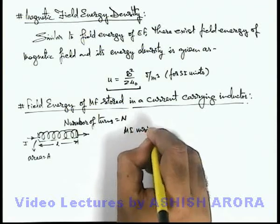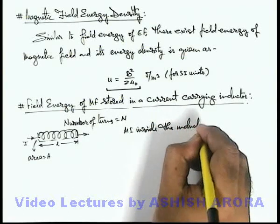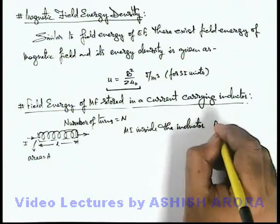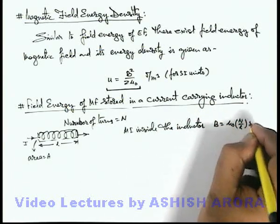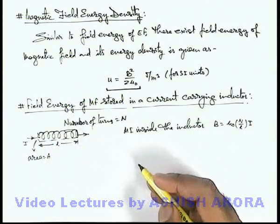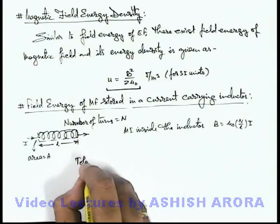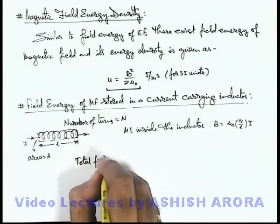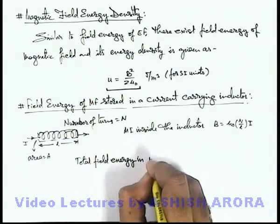Then in this situation, we know if a current I is flowing through the inductor, magnetic induction inside the inductor or this solenoid coil can be given as B equals μ₀ N by L multiplied by the current, where N by L are number of turns per unit length in the inductor. And if this is the magnetic induction, we can calculate the total field energy in the inductor.